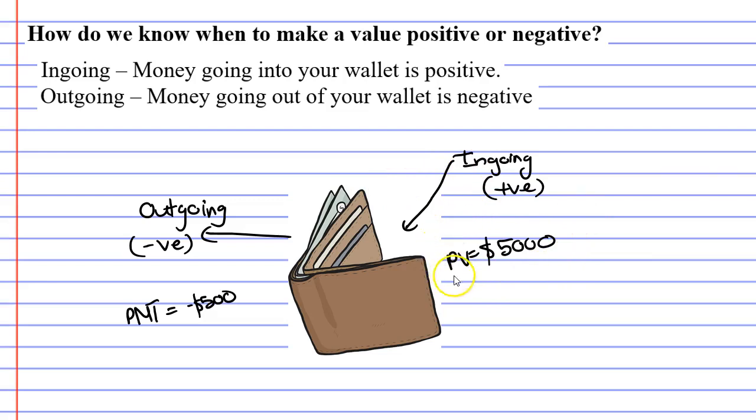Once again, this seems to go against what we think it should be. It's a loan, we think it should be negative, but it's an ingoing, it's got to be positive.